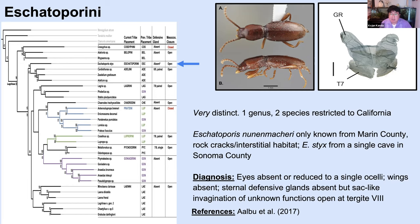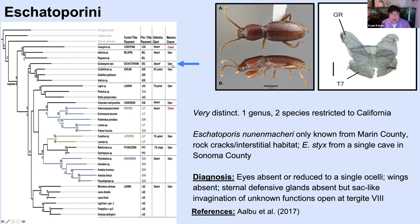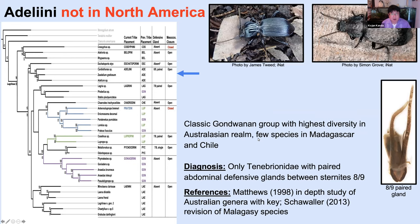The synapomorphy that unites Eschatoporini is unusual: we've been talking about abdominal sternite glands, but these beetles have large sacs on tergite seven — the dorsal abdominal segments rather than the ventrites. It just looks like standard sternal defensive gland reservoirs, but we don't know the function of these — whether it's defensive or something else. Another cool tidbit about this tribe is that they are strongly supported as sister to the Adeliani, which I'll talk about next.